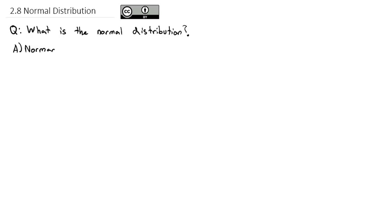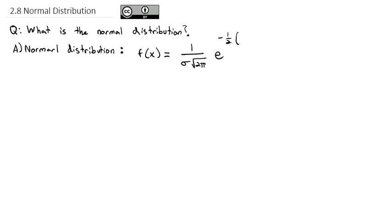The normal distribution is a probability density function with the equation: 1 over the standard deviation times the square root of 2π, times e to the exponent of negative 1/2 times x minus the mean divided by the standard deviation, squared. What's nice is you do not need to know that formula. Instead, we're going to use a table to help us calculate what that formula equals at various points.